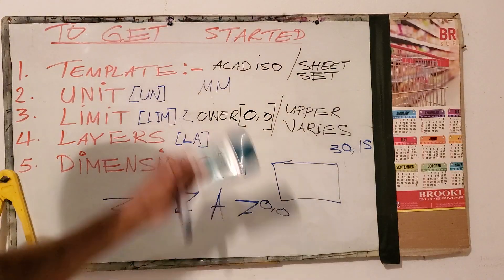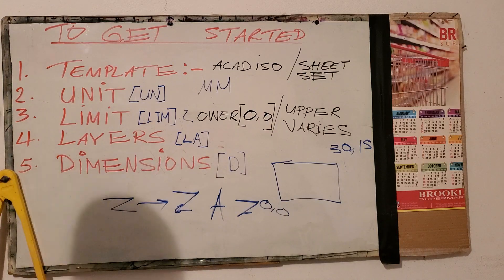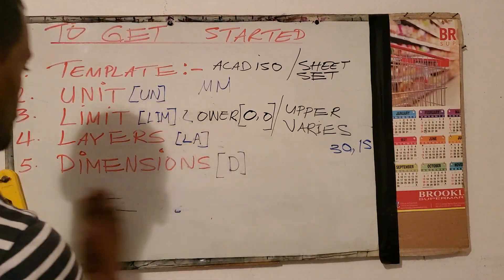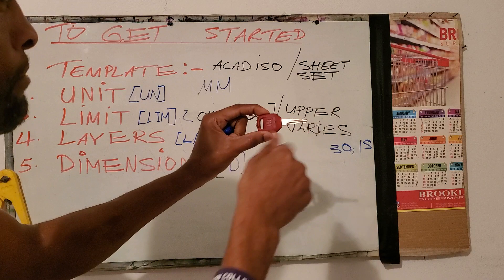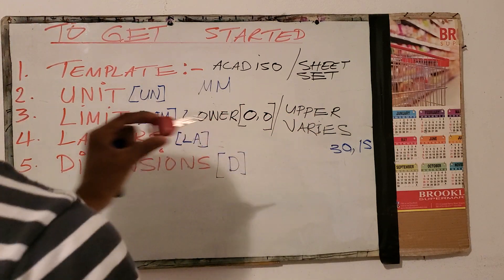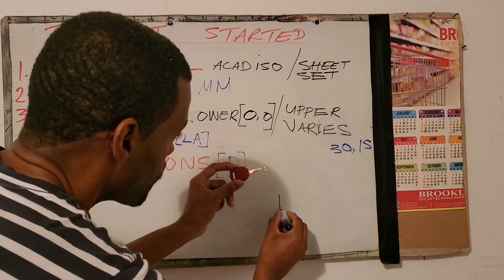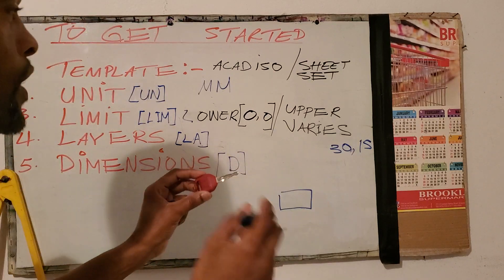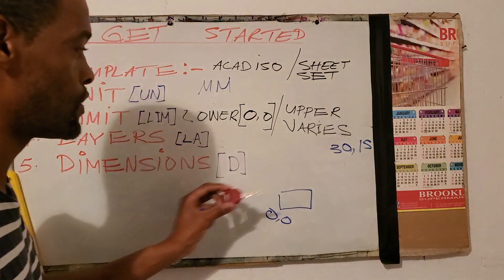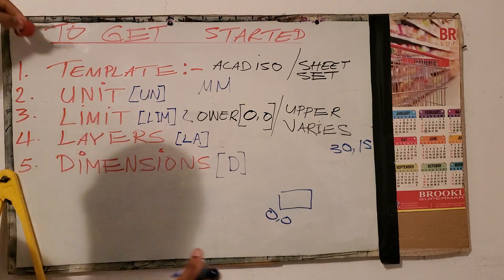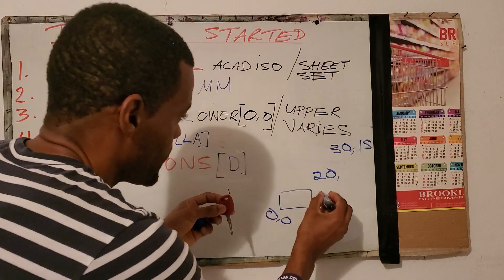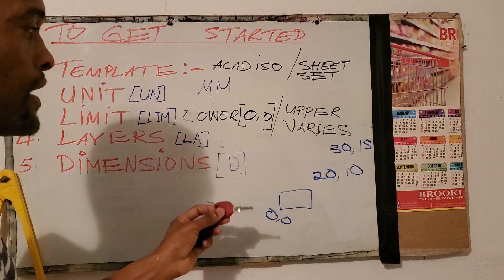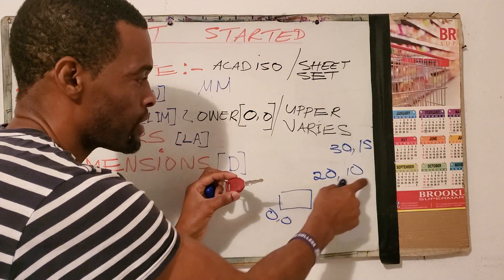Limit varies. Now what if we have another, smaller drawing? For a much smaller size drawing, our limit would be much smaller. Our lower limit is also 0,0. The upper limit would be the distance here — 20 on the x-axis and 10 on the y-axis. So in this case our upper limit would be 20 comma 10.